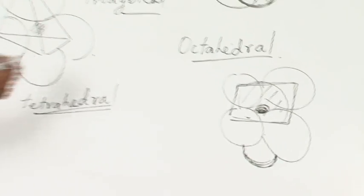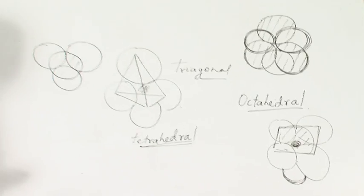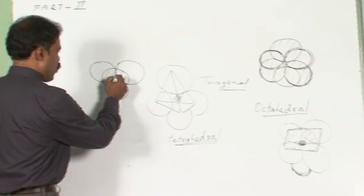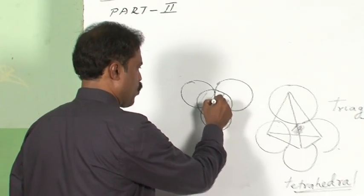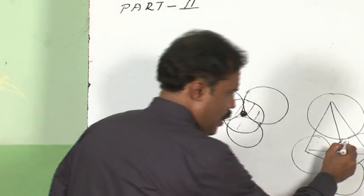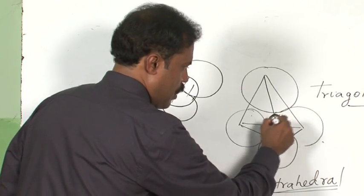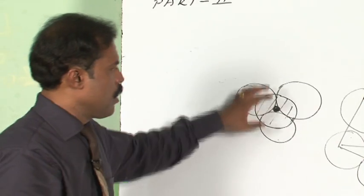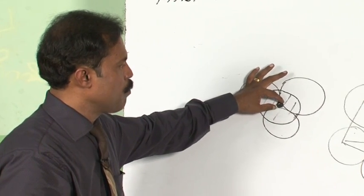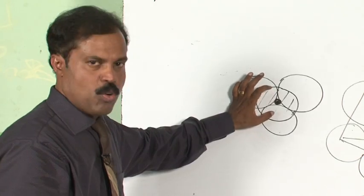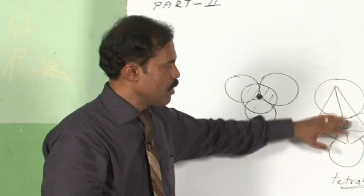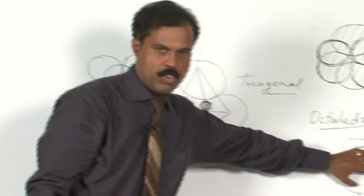Why do we study about these voids? The reason is that when a crystal is formed, these voids can be utilized for particles to accommodate. A particle can get accommodated in a tetrahedral void or in an octahedral void depending on what is called the radius ratio. The kind of void a particle occupies depends on the size of the spheres.